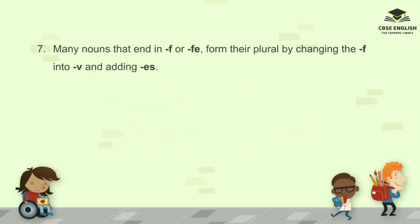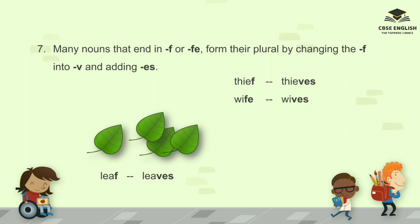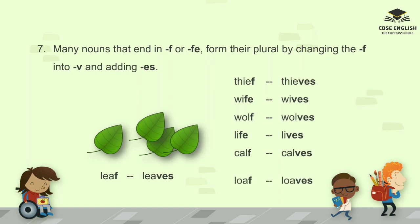Many nouns that end in F or FE form their plural by changing the F into V and adding ES. For example: leaf, leaves; thief, thieves; wife, wives; wolf, wolves; life, lives; calf, calves; loaf, loaves; shelf, shelves.